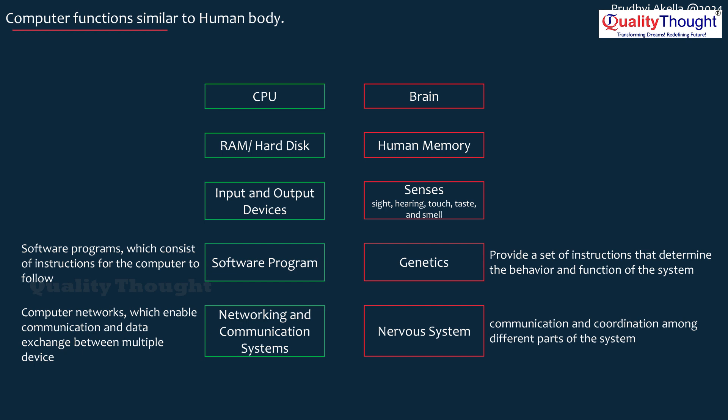Take the eye as an example — the eye is similar to an input device. Its responsibility is to capture what the human is looking at, convert that into an electrical signal, and pass it to the brain via the optic nerves. In the same way, a computer has different input and output devices that capture actions from the external world. A software program is very similar to genetics — it is a set of instructions given to a computer telling it what activity to perform. And networking and communication systems are similar to the nervous system.